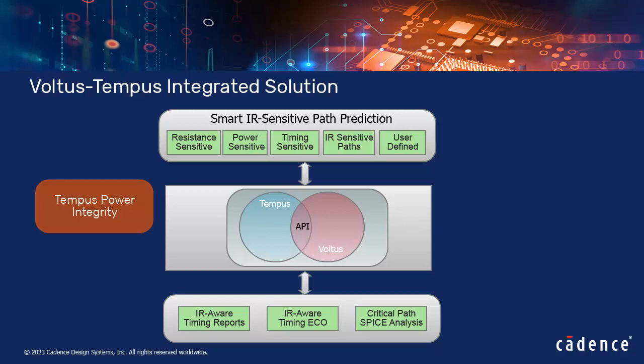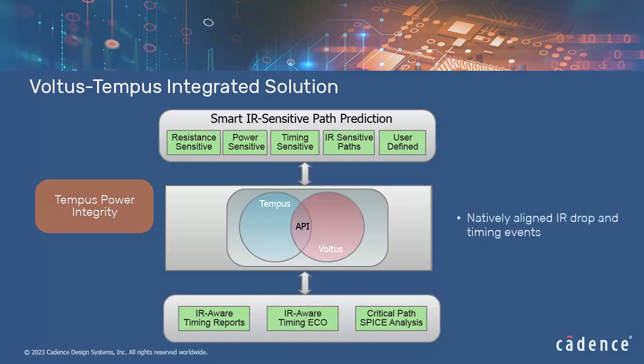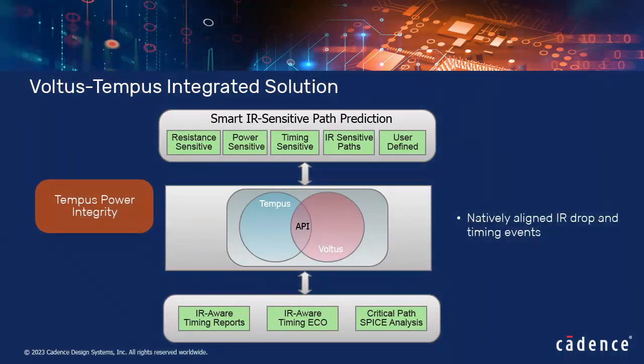The Tempus power integrity flow aims to identify IR-sensitive timing paths, to accurately predict IR drop on these paths with dynamic vectorless analysis, and to enable automated fixing of these critical paths using Innovus and Tempus IR ECO. The IR drop and timing events are natively aligned within the tool because Tempus and Voltus share all information such as IR drop, timing windows, and switching within the timing windows.